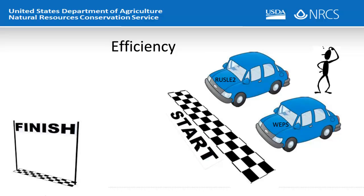If you had to calculate water and wind erosion for a land unit, you would have to run both RUSLE2 and WEPs. Imagine you had two cars to get to another location and you are alone — you would have to get into one car, get everything set, adjust your seat position, put on your seat belt, adjust the mirrors, and drive it to the finish. Running two separate tools for erosion calculations is similar to that process.